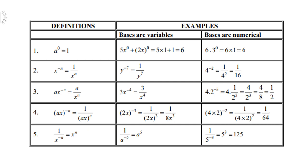For example, 3x to the power negative 4: 3 remains in the numerator and only x to the power negative 4 goes to the denominator. Similarly, 4 times 2 to the power negative 3: the 4 remains up there, and only 2 to the power negative 3 goes down, giving 4 over 8, which is one half.